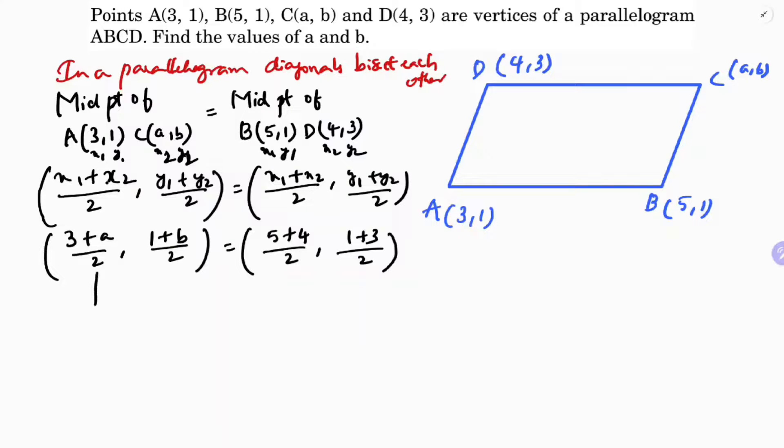Now if you equate abscissa with abscissa and ordinate with ordinate. So (3 + a)/2 = 9/2. Cancel the 2s. 3 + a = 9. a equals 9 minus 3 which is 6.